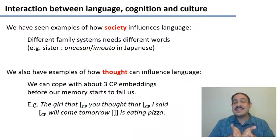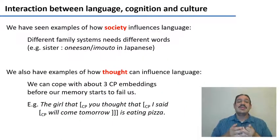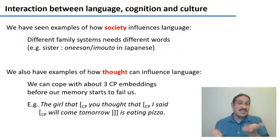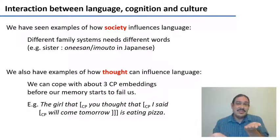We've examined how society can influence a language. For example, if you have a society that distinguishes between older and younger siblings, you would need different words for them — like in Japanese, where oneeisan and imoto mean older and younger sister.